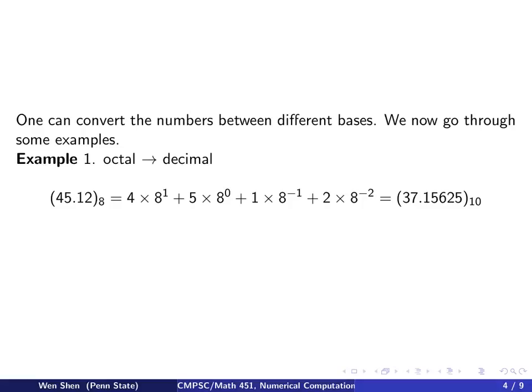Let's practice how to convert numbers between different bases. The first example is a conversion from octal to decimal. Say you have 45.12 in octal base, and you want to find its value in decimal. We simply apply the formula we just learned. The 4 is multiplied by the base 8 to the power 1, and the 5 is 5 times base to the power 0, which is 1. The first decimal place 1 is multiplied by 8 to the negative 1, and the 2 is multiplied by 8 to the negative 2. You evaluate it, and this gives 37.15625 in decimal.